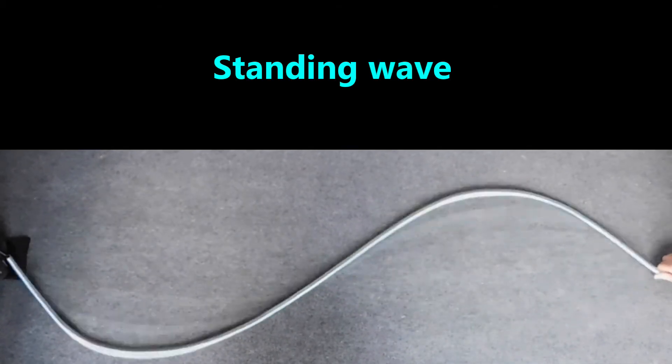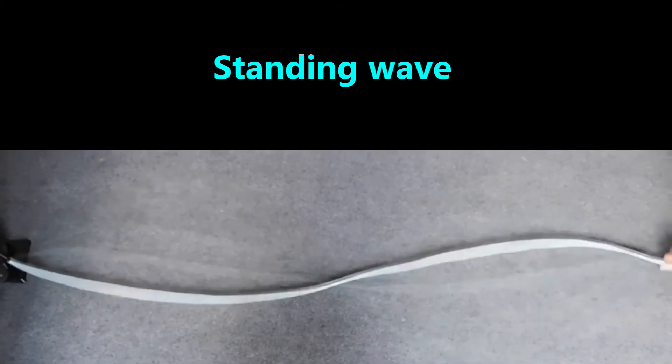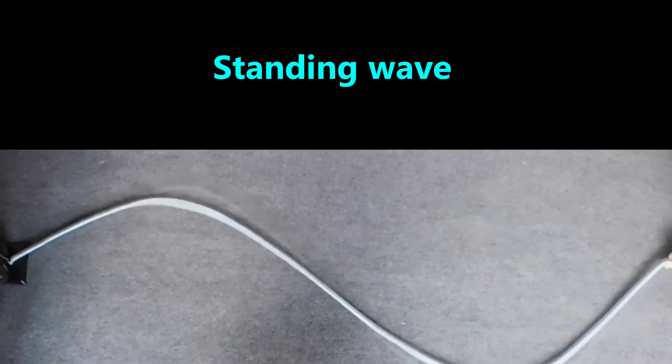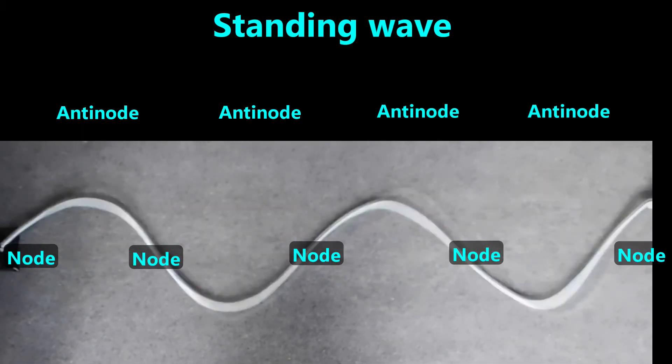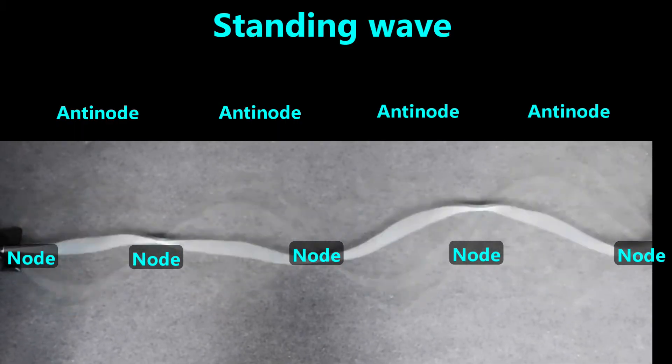Now, it's no longer possible to see the wave traveling in a given direction. We call this a standing wave. The places that are still are called nodes. The places that are alternating between crests and troughs are called antinodes.